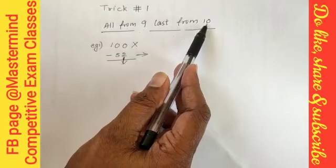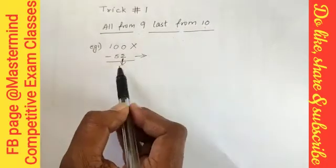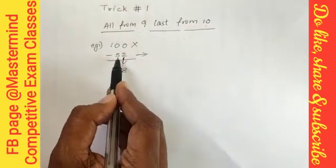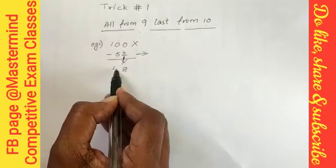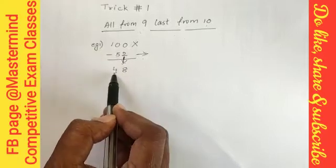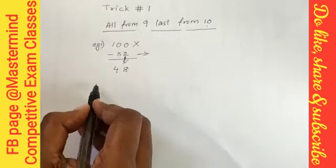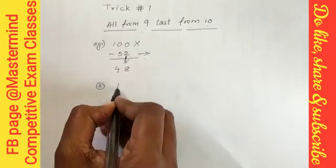10 minus 2 is 8, and rest all from nine, so 9 minus 5 is 4. Your answer is 48. Now let's go to one more example: 100 minus 26. Again, all from nine last from ten. So 10 minus 6 is 4, 9 minus 2 is 7. Your answer is 74.